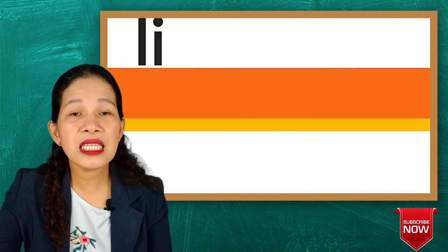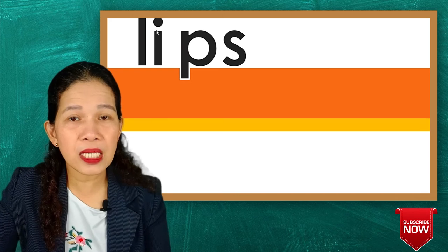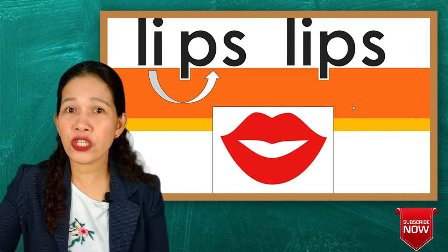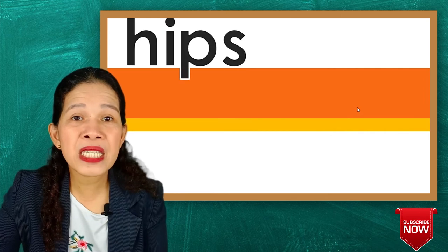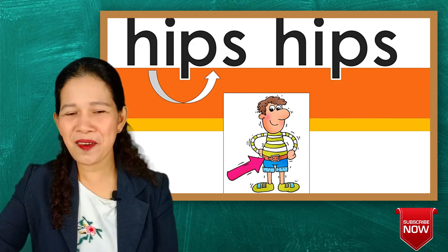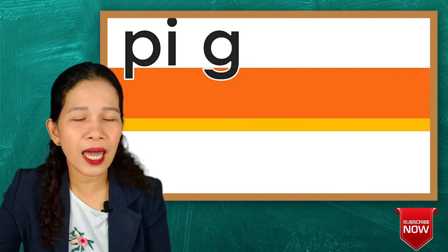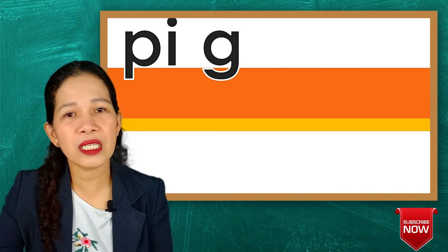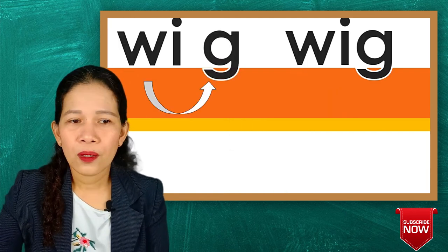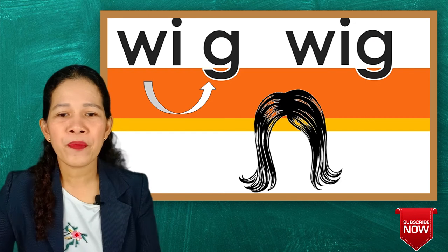Next is li-ps, lips. You give the sound of the P and S — lips. Here is a picture of lips. Next: he-ps, hips. Where are your hips? Okay, shake your hips! Come on. Next, let's have pig — here we have the ending sound G. That's pig. Next is wig — that's a wig, that's artificial hair, not a true kind of hair.